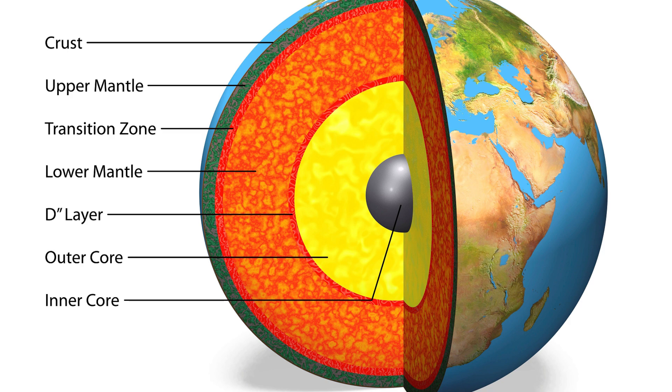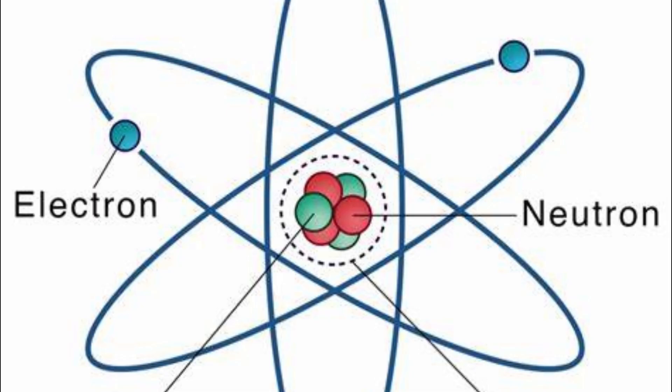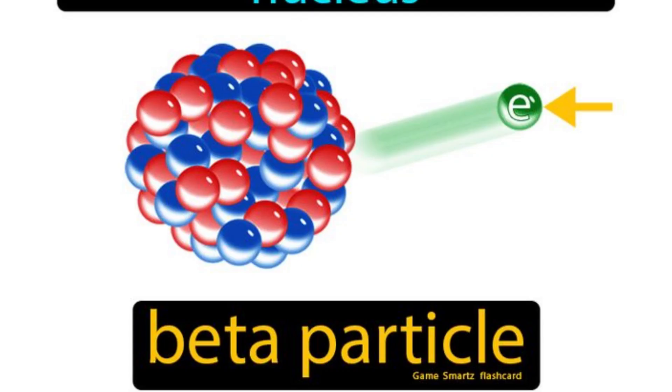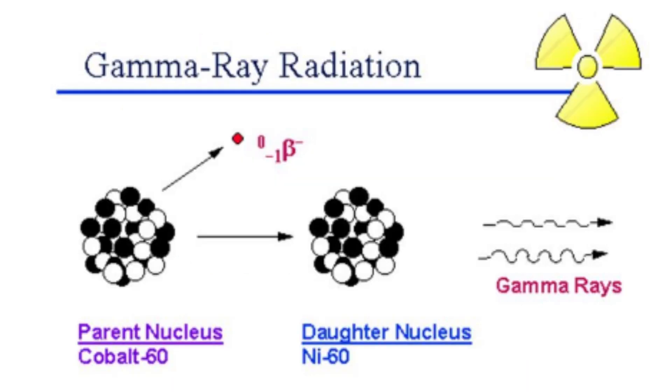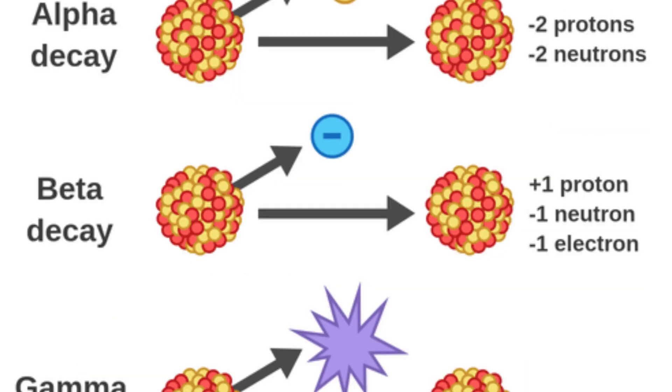Radioactive decay is the process by which an unstable atomic nucleus loses energy by emitting radiation. This occurs because the nucleus has an excessive energy or mass. Here are a few kinds of radioactive decays: alpha decay, beta decay, gamma decay, and neutron emission, all resulting from different processes.